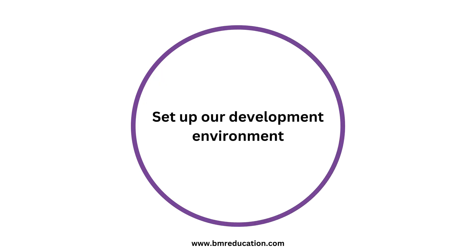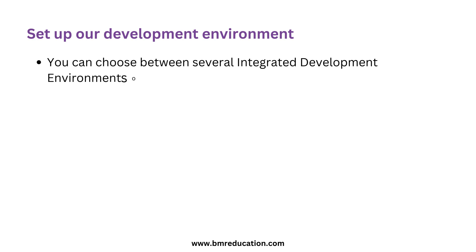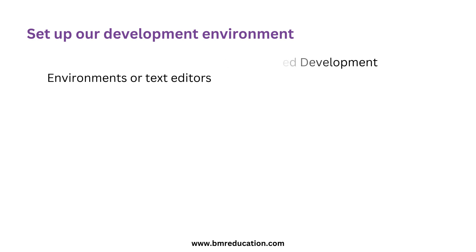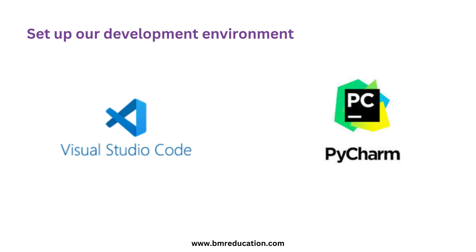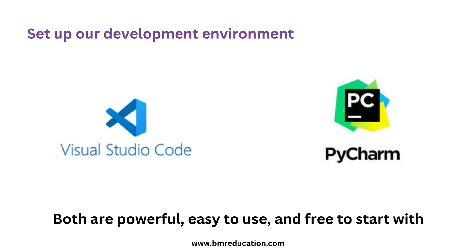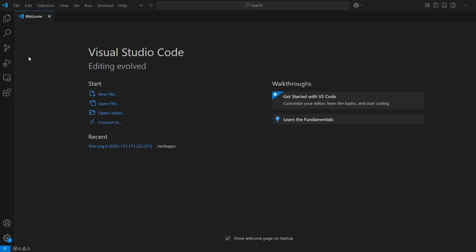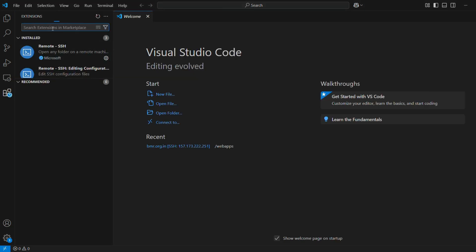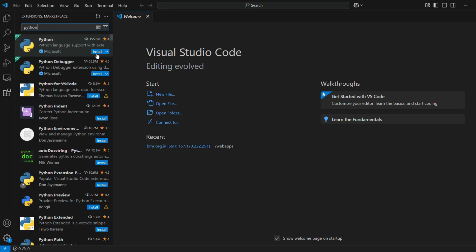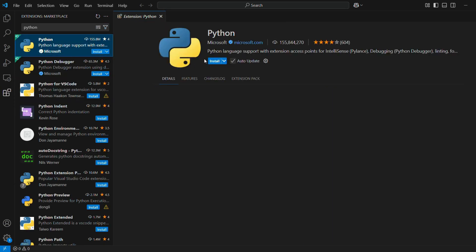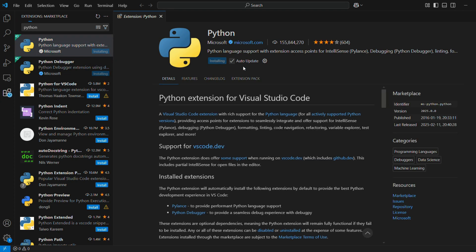Next, let's set up our development environment. You can choose between several integrated development environments or text editors. Personally, I love using Visual Studio Code and PyCharm. Both are powerful, easy to use, and free to start with. In Visual Studio Code, simply head to the Extensions tab, search for the Python extension, and install it. This extension gives you features like code linting, debugging, and even running your code directly from the editor.